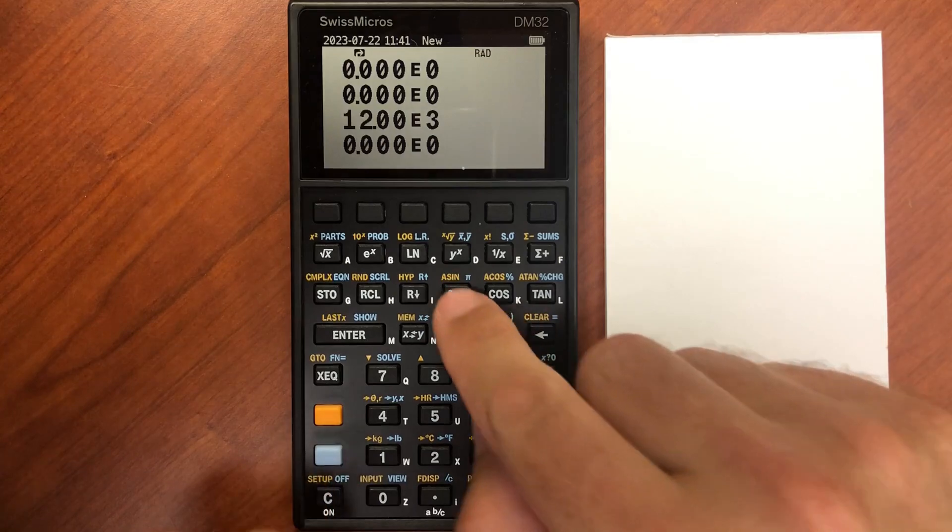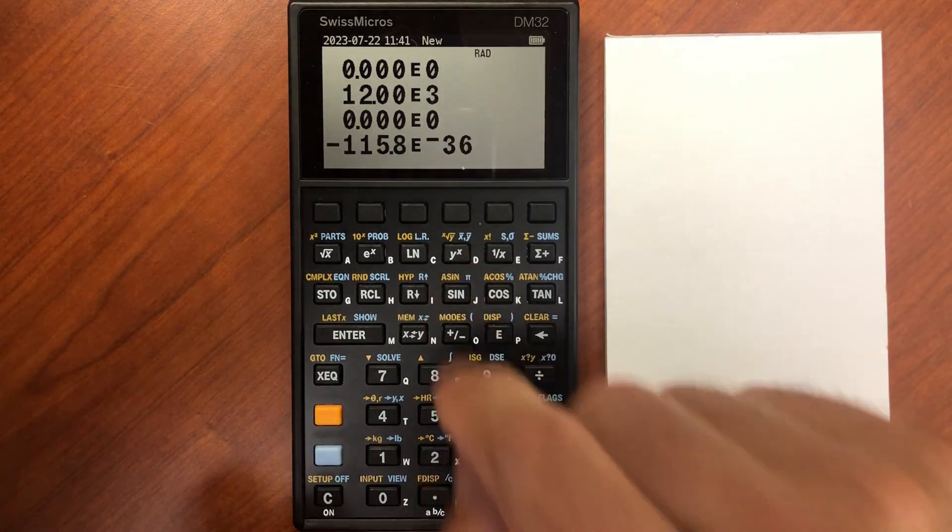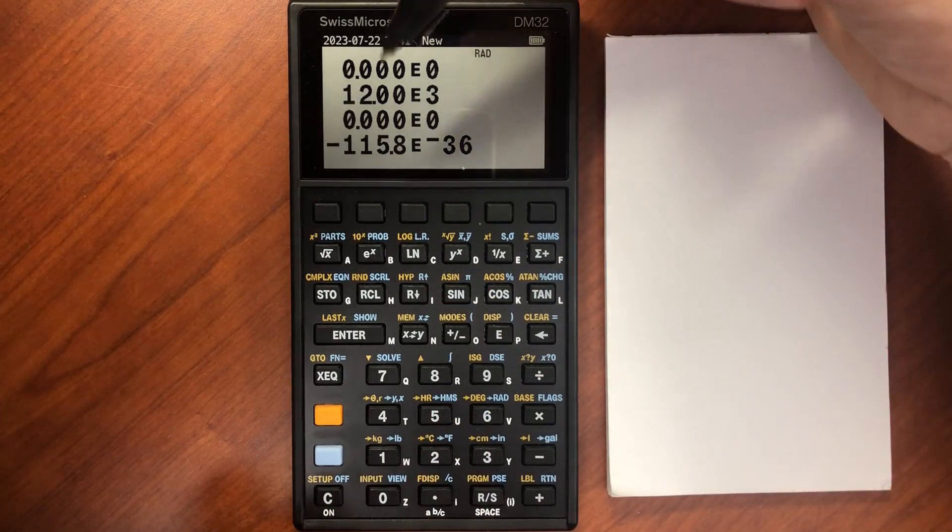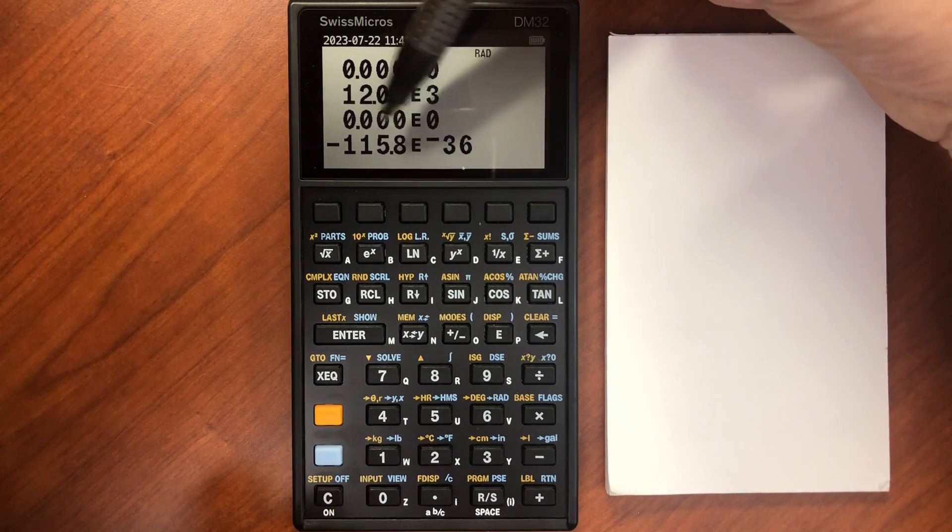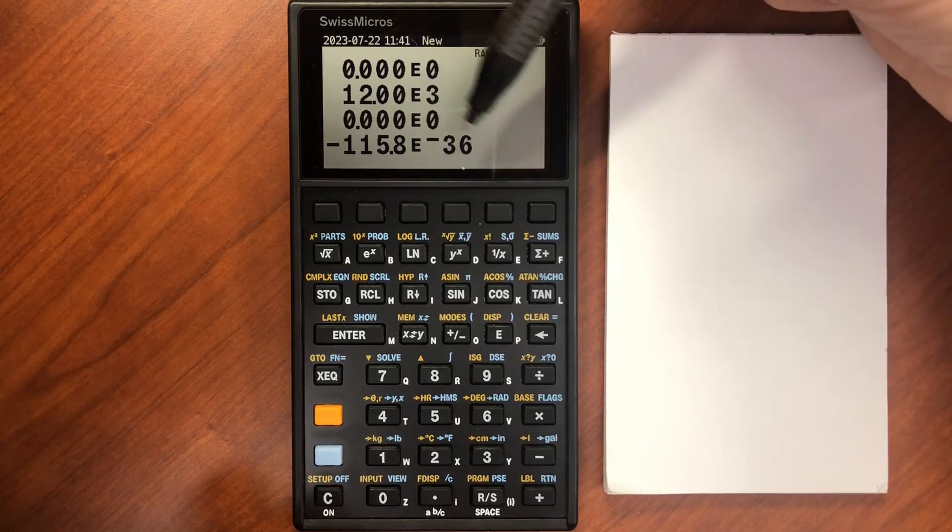so now I do pi, and let's take the sine of that. And it says negative 115.8 times 10 to the negative 36.